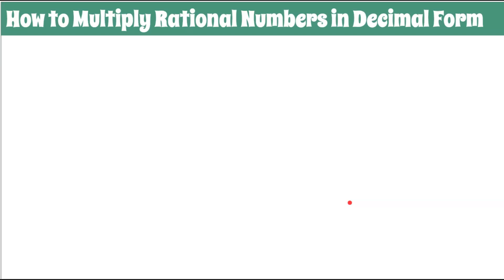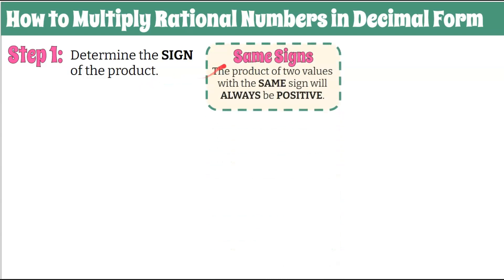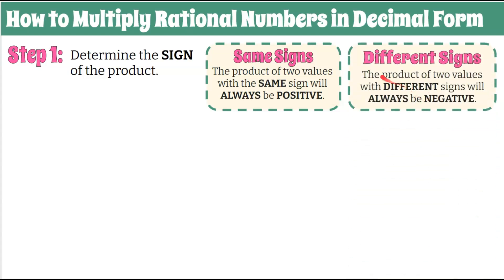Here are our easy step-by-step instructions on how to multiply rational numbers in decimal form. Step one: we're going to determine the sign of the product. We're going to remember our same signs rule — the product of two values with the same sign will always be positive. And our different signs rule — the product of two values with different signs will always be negative. If they're both positive or both negative, the product will be positive. If one value is positive and one is negative, negative product.